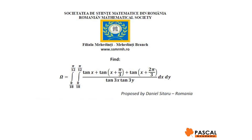In this video, we are going to find omega equals the integral from pi over 18 to pi over 12, integral from pi over 2 to pi over 12, of tan(x) plus tan(x + pi/3) plus tan(x + 2pi/3) divided by tan(3x) tan(3y) dx dy.